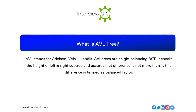What is an AVL tree? AVL stands for Adelson-Velski-Landis. AVL trees are height-balancing BSTs. They check the height of left and right subtrees and ensure that the difference is not more than one. This difference is termed the balance factor.